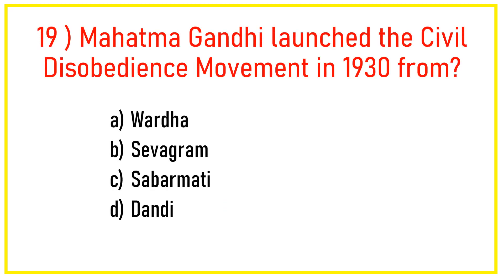Q19. Mahatma Gandhi launched the Civil Disobedience Movement in 1930 from? Answer: Option C — Sabarmati.